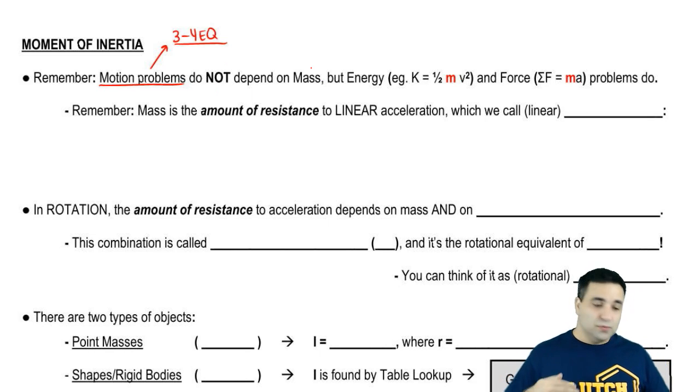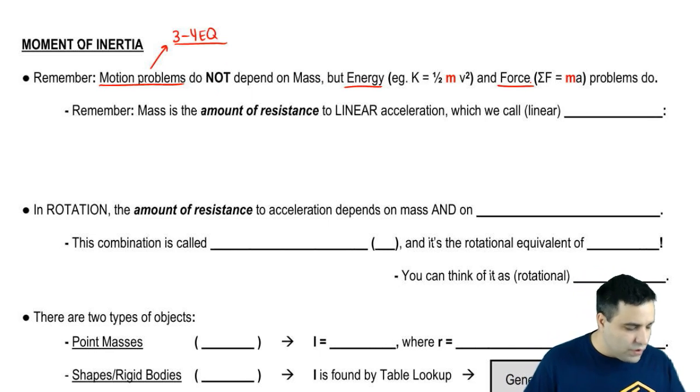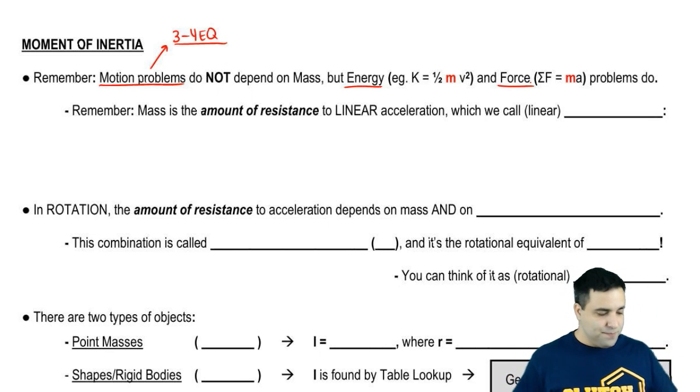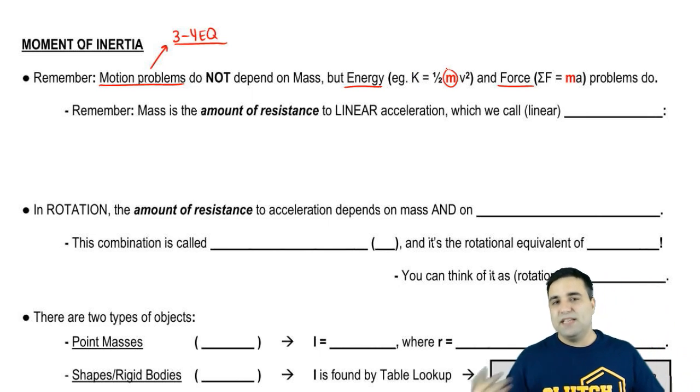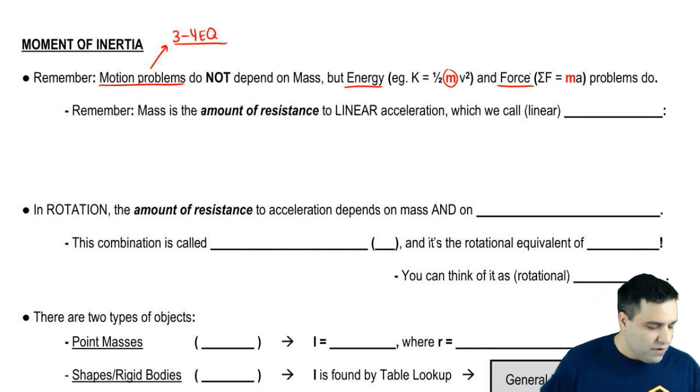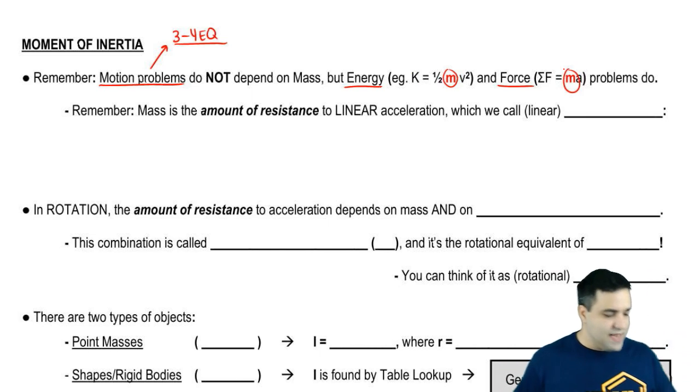But once you moved into energy problems or force problems, dynamics problems, mass was important. So here's kinetic energy is half mv squared, gravitational potential energy has a mass, force F equals ma, that has a mass as well.